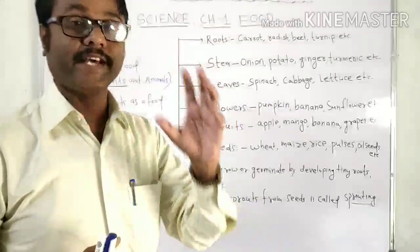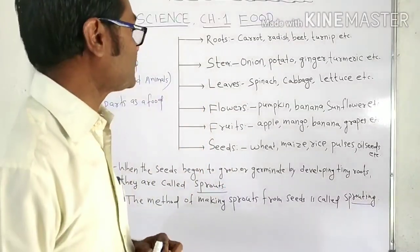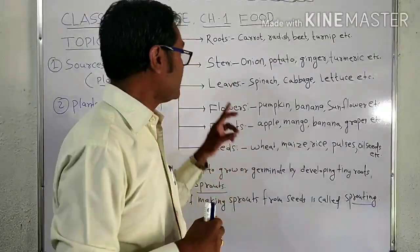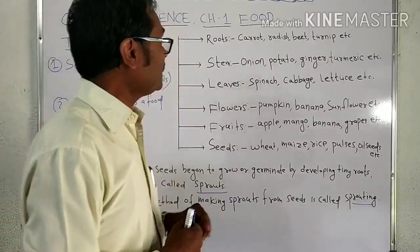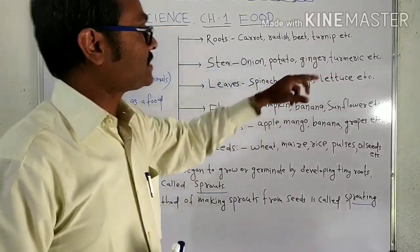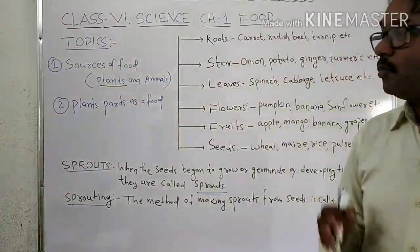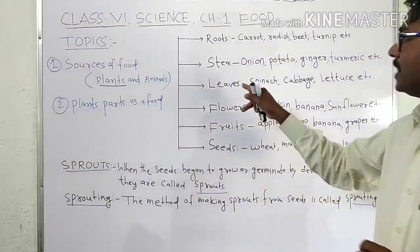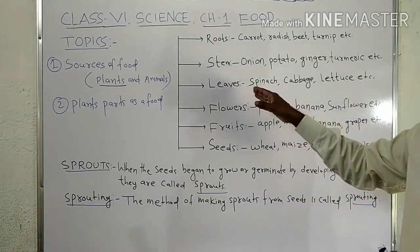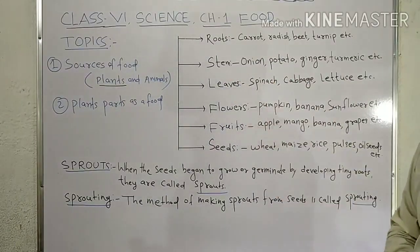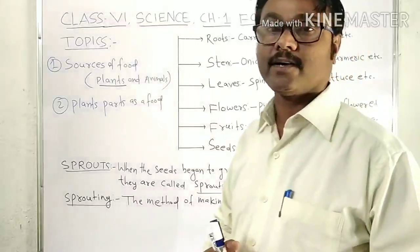The third part of the plant taken as food is leaves. Green leafy vegetables are very important, especially for children — you must take green and leafy vegetables. Examples include spinach, cabbage, and lettuce. These are plant products coming from the leaves part, and they are very important.